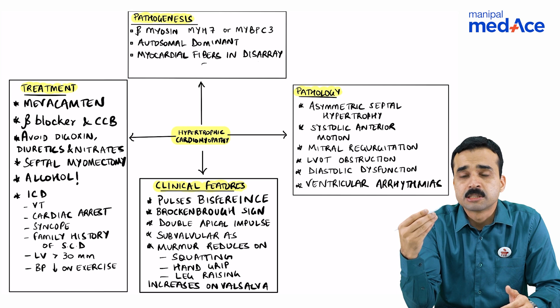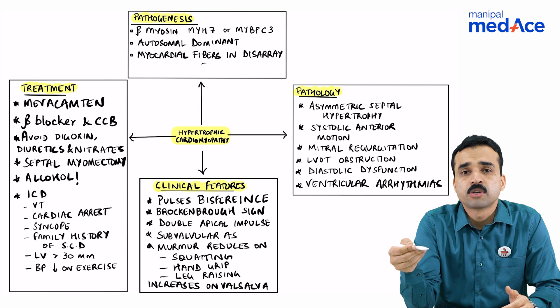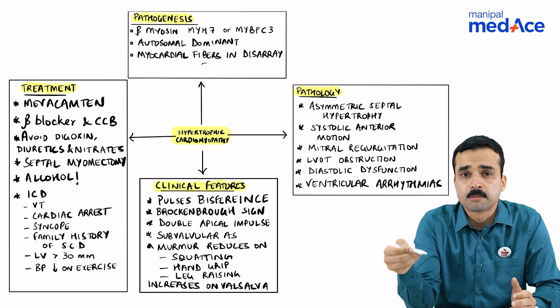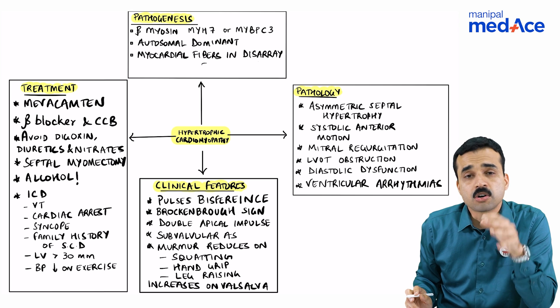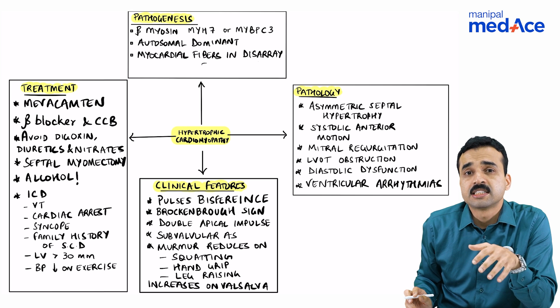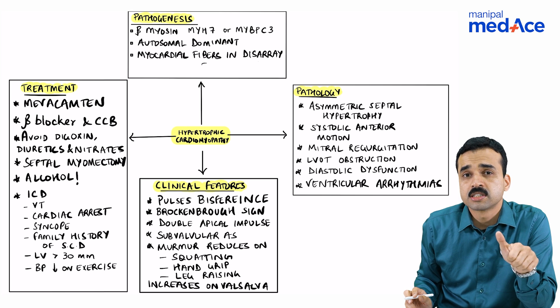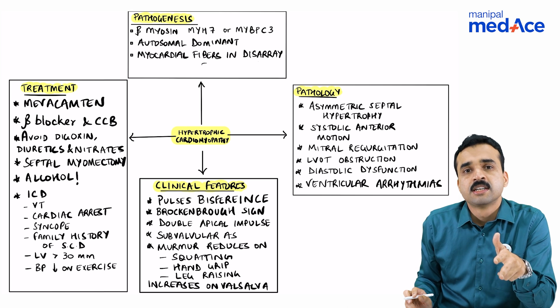Otherwise, the drug of choice is beta-blockers. You can also use verapamil-like calcium channel blockers. Three classes of drugs which are contraindicated in HCM include digoxin, nitrates, and diuretics.